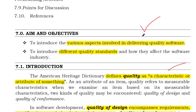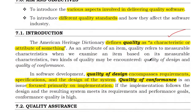We can say quality is the characteristics or attributes of it. In software development, the quality of the design encompasses the requirements, specification and design.